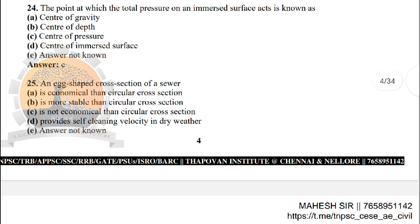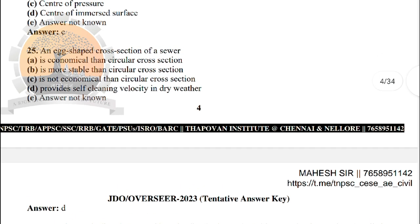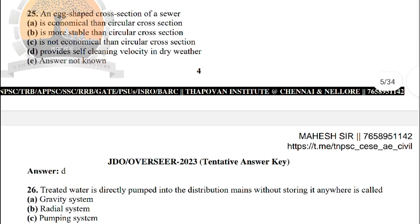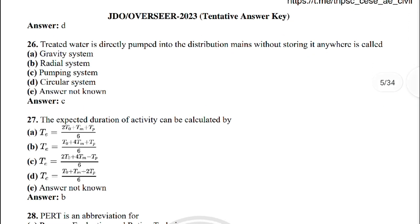Next: an egg-shaped cross section of sewer — the correct answer is option D: provides self-cleaning velocity in dry weather condition. Next: treated water is directly pumped into the distribution mains without storing it anywhere is called — option C: pumping system.